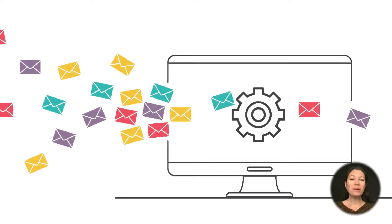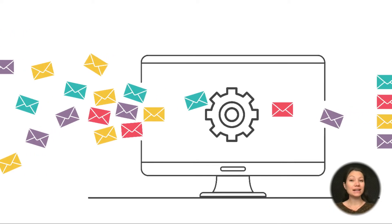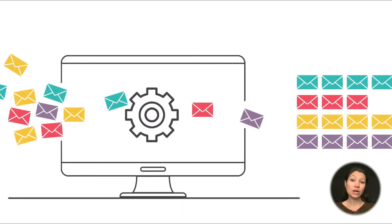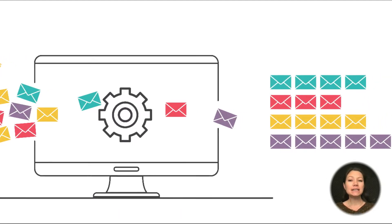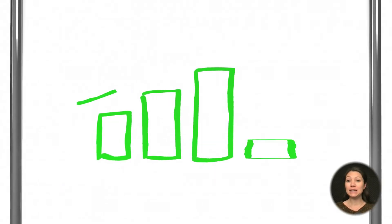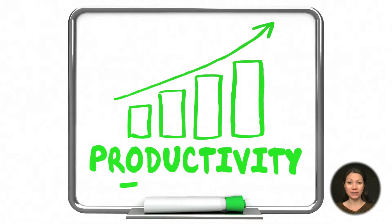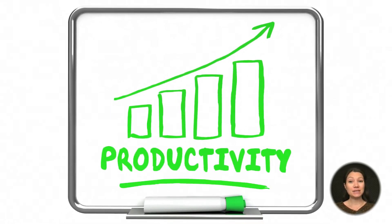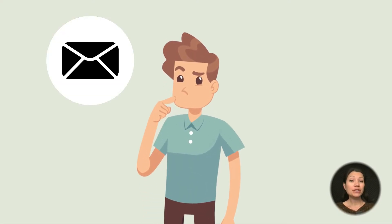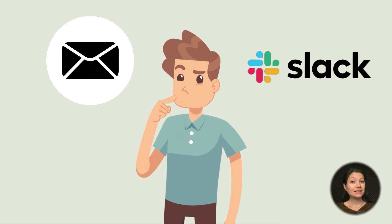Hello, guys! We all know that organizing your messages, files, and communication as a whole significantly boosts your productivity and makes it easier to find what you look for. And it's best when everything you need is in one place. But what should that place be? Your email or a communication platform, such as Slack?